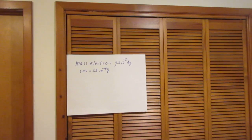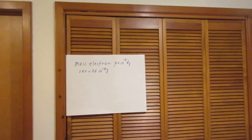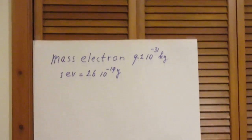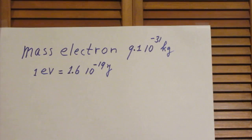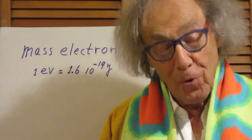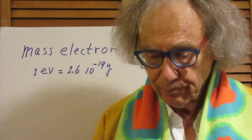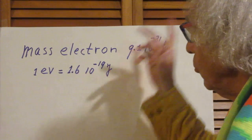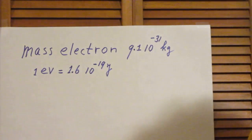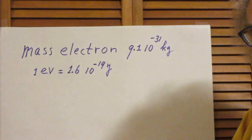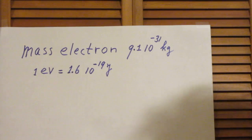I will give you the mass of an electron if you need that. The mass of an electron is 9.1 times 10 to the minus 31 kilograms. If you insist on working with SI units, then I give you 1 electron volt is 1.6 times 10 to the minus 19 joules.